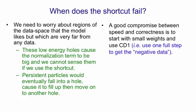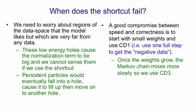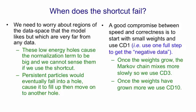A good compromise between speed and correctness is to start with small weights and to use CD1, that is contrastive divergence with one full step to get the negative data. Once the weights have grown a bit the Markov chain is mixing more slowly and now we can use CD3. And once the weights have grown more we can use CD5 or 9 or 10. So by increasing the number of steps as the weights grow we can keep the learning working reasonably well even though the mixing rate of the Markov chain is going down.